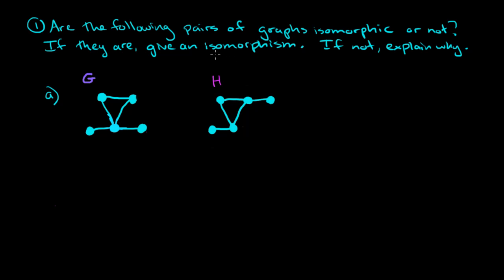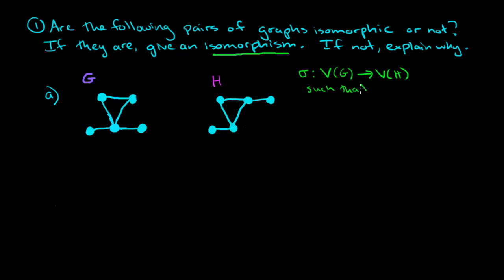Let me remind you what an isomorphism is. Basically, it's going to be some mapping — I'll call it sigma. Sigma is going to be a map from the vertices of the first graph to the vertices of the other graph, such that if there is an edge uv in the first graph, then that edge has to be in the other graph after the mapping. So sigma of u, sigma of v has to be in the other graph H.